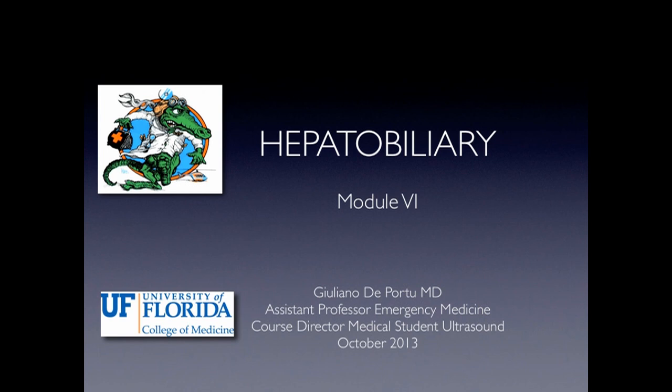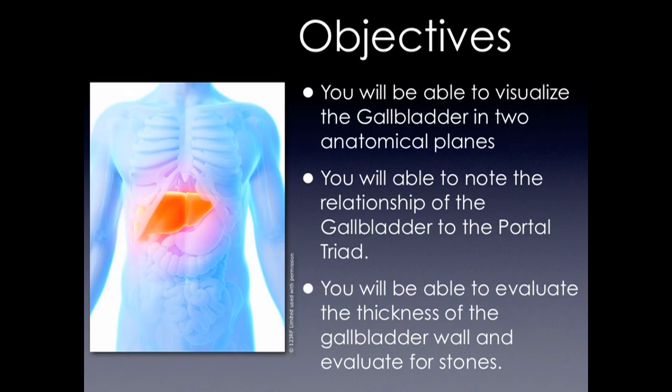Welcome to the College of Medicine Ultrasound Module Number 6, Hepatobiliary. You're going to be able to visualize the gallbladder in two planes, check its relationship with the portal triad, and evaluate the thickness and the presence of stones.